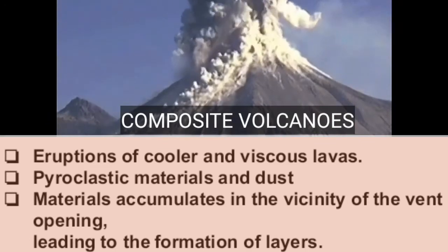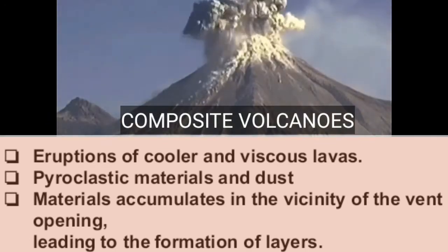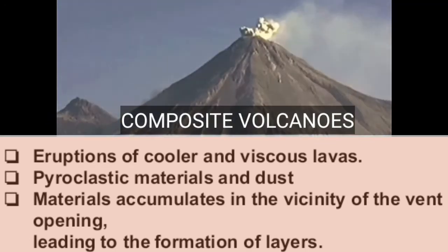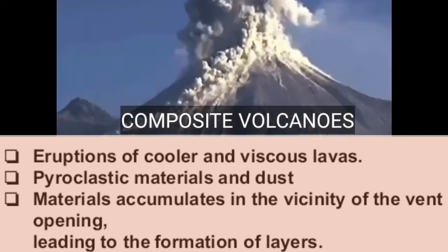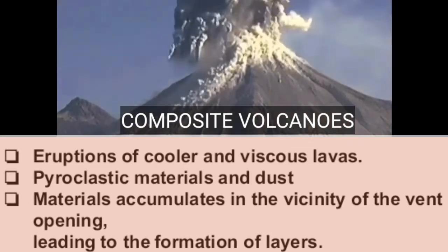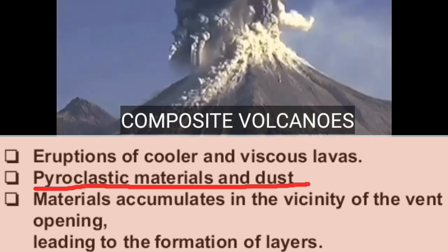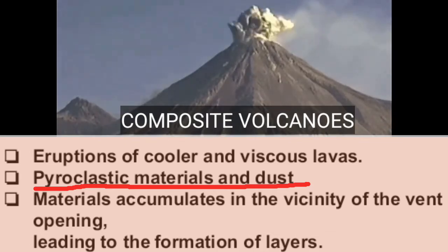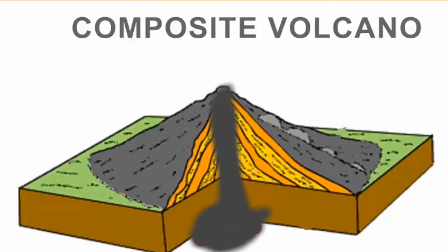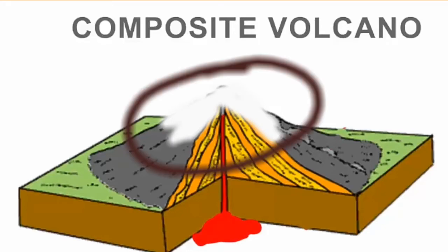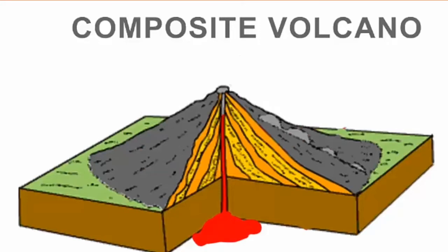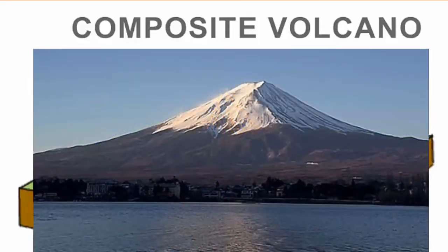The next type of volcanoes is the composite volcanoes. These volcanoes are characterized by the eruptions of cooler and more viscous lavas. The materials that find their way to the surface include large amounts of pyroclastic materials and dust. After the volcanic eruption, the material comes out and accumulates in the vicinity of the vent opening, leading to the formation of layers, making the mount appear more as a composite volcano.